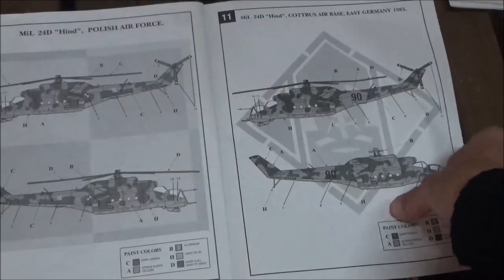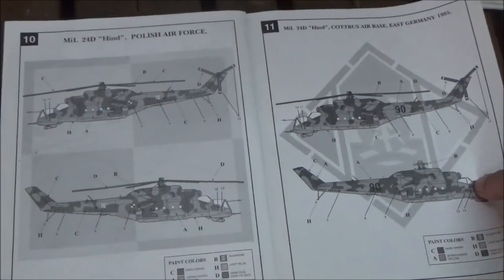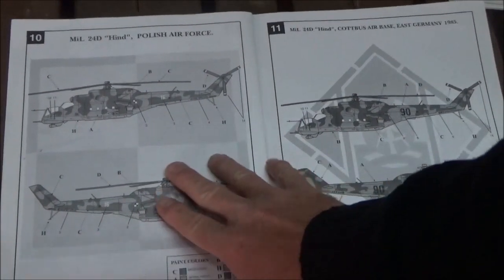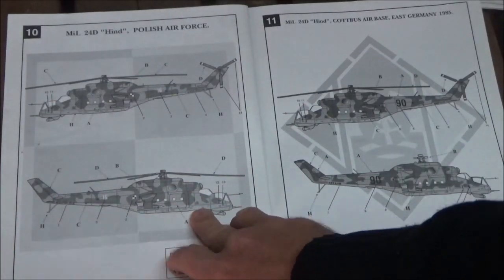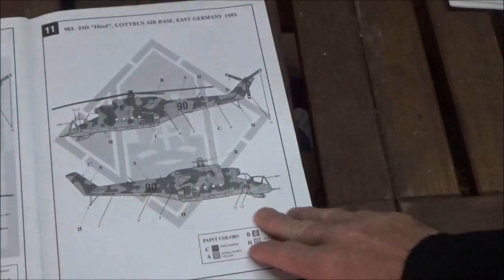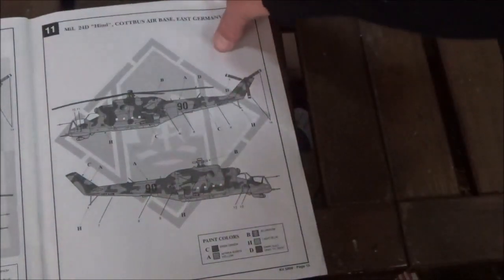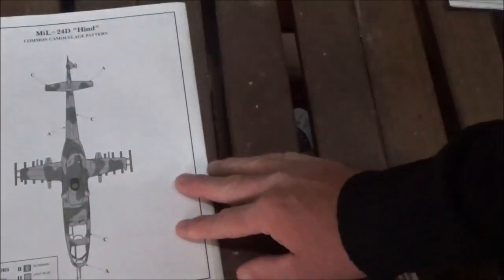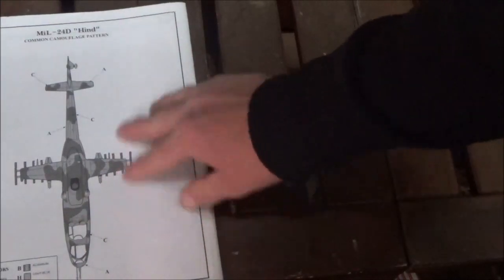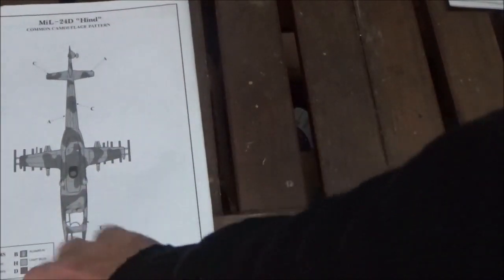Now we're finished with the build. I have a couple options here on this kit. This is a Hind from the Polish Air Force, and this is a Hind from East Germany, which was the one I built. Here it just shows the common camouflage patterns with the colors and everything.